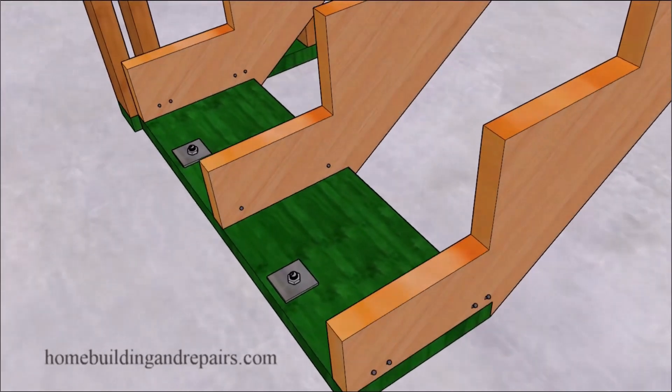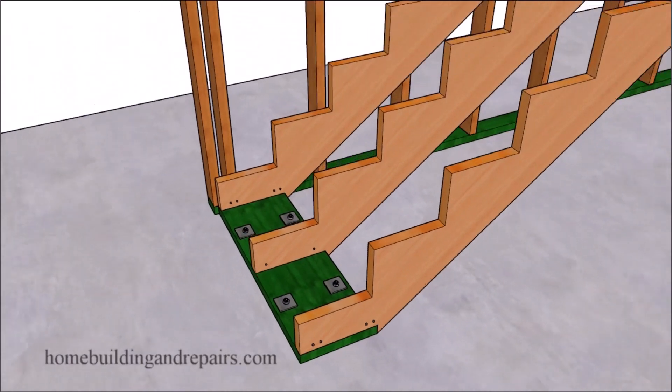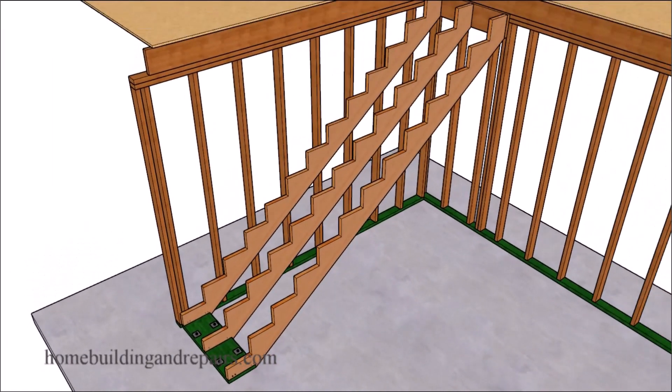Otherwise, you could end up with the board twisting and forcing one side of the stringer up. And that's probably not going to happen if you have enough base framing anchors to prevent that from happening.